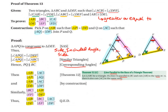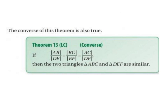These questions can be quite confusing because there are so many letters in them, but it is strongly suggested that you colour-code everything — it is much easier to see what is going on when you do that. Finally, the converse of this theorem is also true: if AB divided by DE equals BC divided by EF equals AC divided by DF, then the two triangles ABC and DEF are similar.